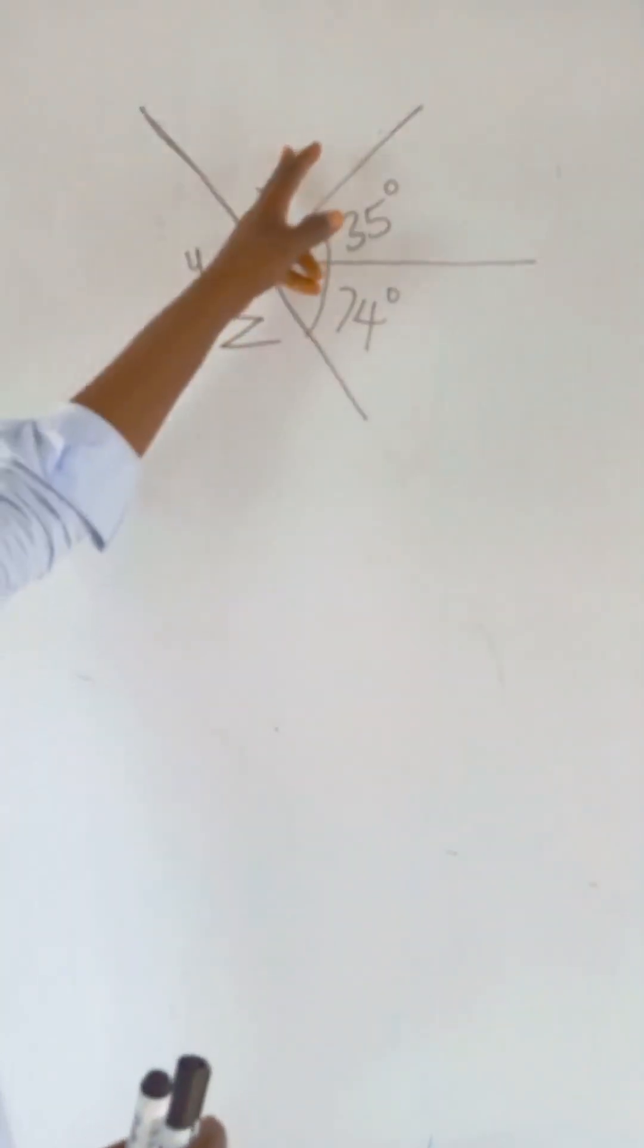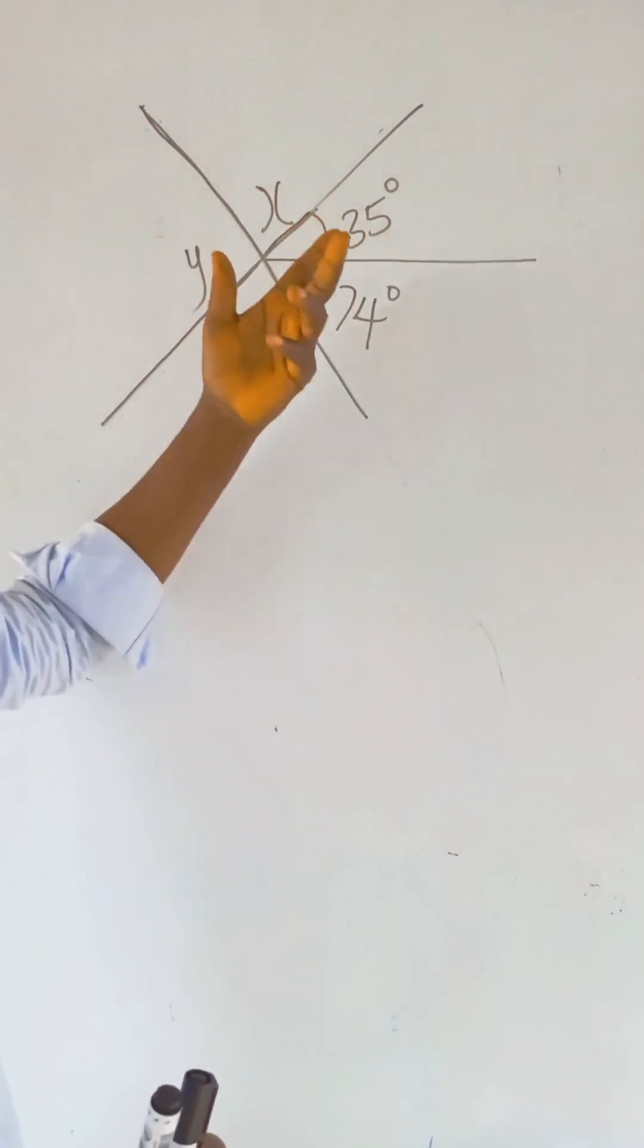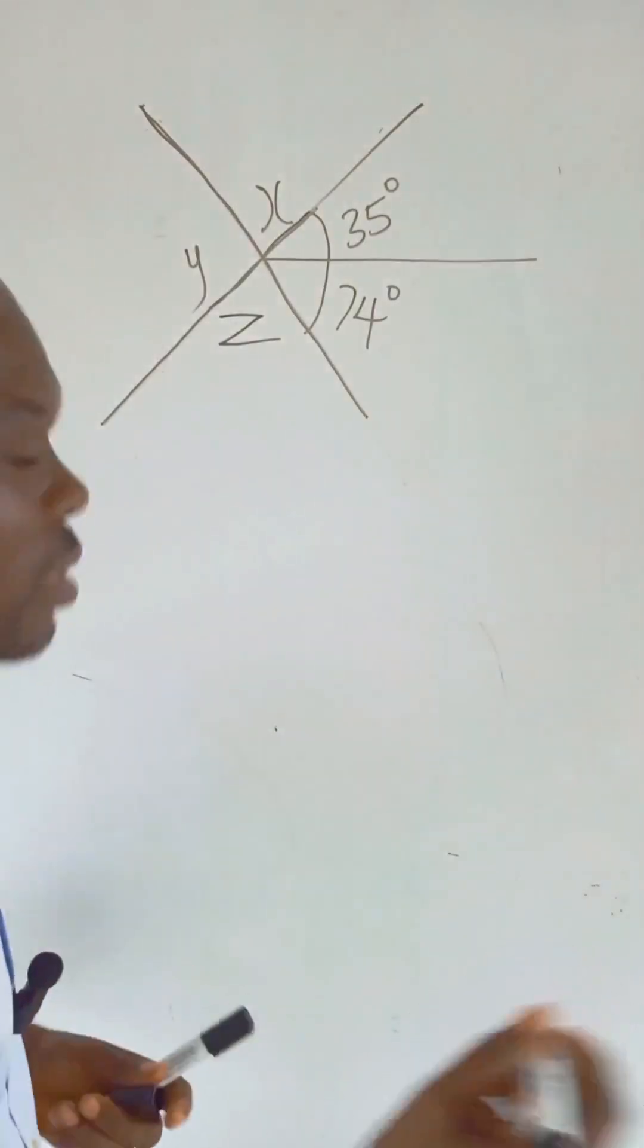So for us to get X, what we simply do is add here, add here, subtract it from 180. Whatever we get becomes the value of X. So let's go.